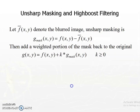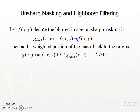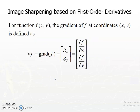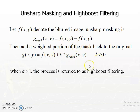Unsharp masking and high boost filtering: take the original image and add a high-pass filtered version of it. g(x,y) = f(x,y) + s · g_mask(x,y), where g_mask(x,y) = f(x,y) - f̄(x,y). Since f̄(x,y) is a low-pass filtered image, subtracting it from the original gives the high-pass filtered image. This enhances edges in the output.